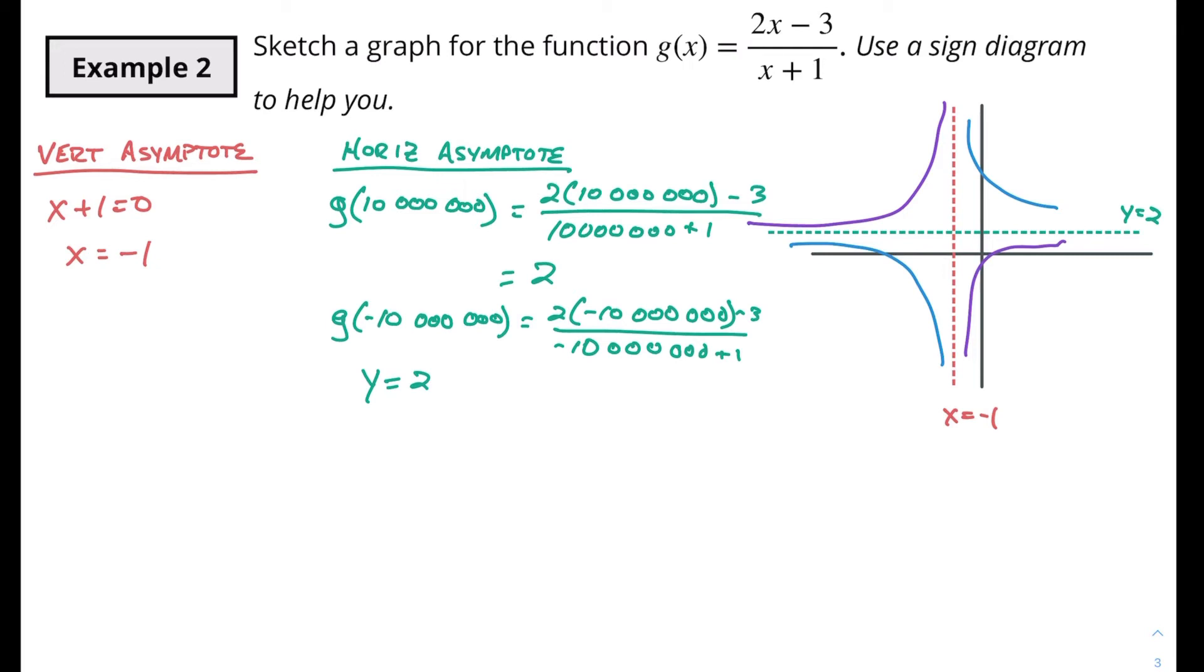So to find the x-intercepts is when y is equal to 0. So x-intercepts are when y equals 0. So 0 equals 2x minus 3 over x plus 1. We saw in previous videos that when we multiply both sides by x plus 1 we're just left with 2x minus 3. So 2x minus 3 is equal to 0. Add 3 to both sides divide by 2. So x is gonna be 3 over 2.